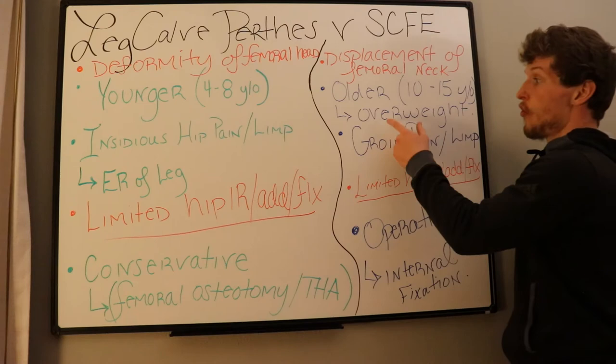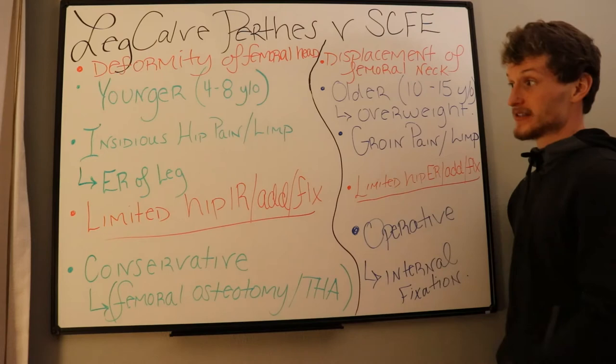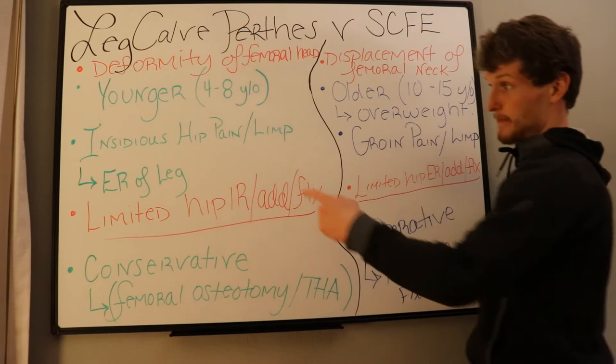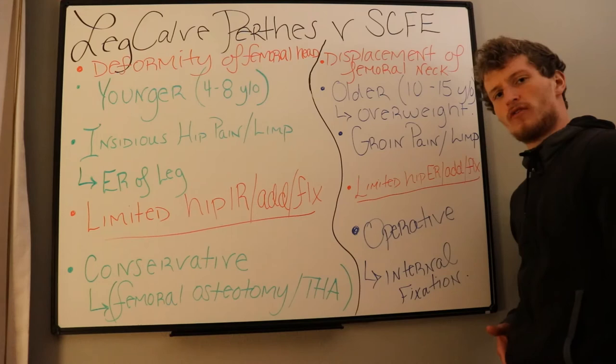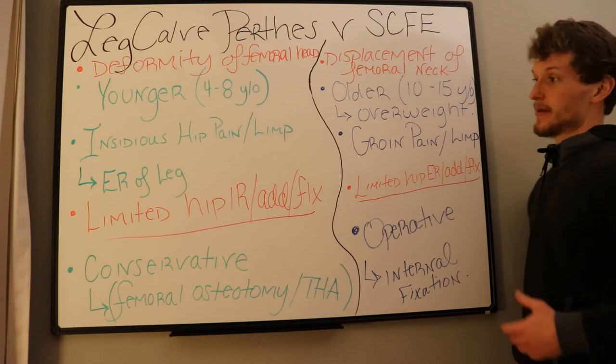It is your overweight pediatric population that this typically affects. The difference in their presentation is that with Legg-Calvé-Perthes they have insidious hip pain with no cause and a limp, whereas with SCFE it's more of that groin pain going into the groin, and again they also present with a limp.